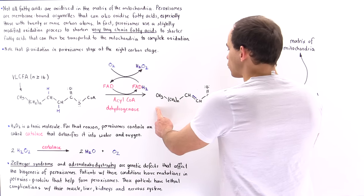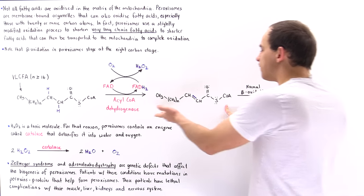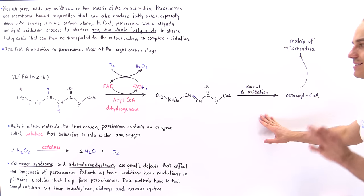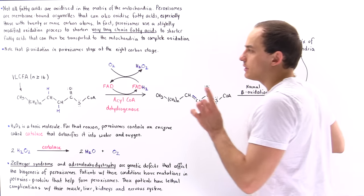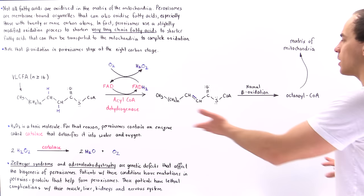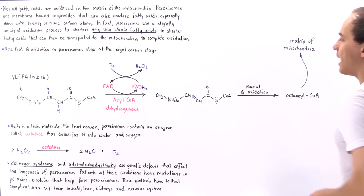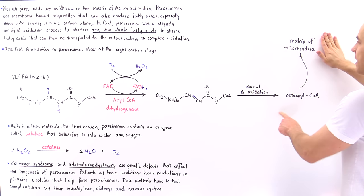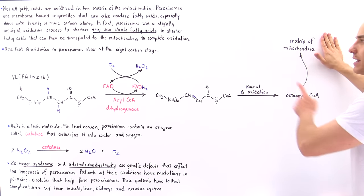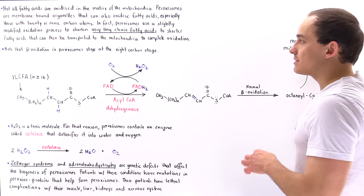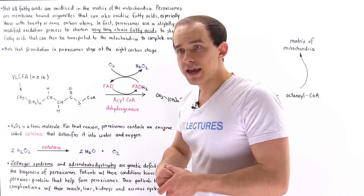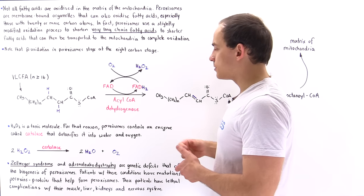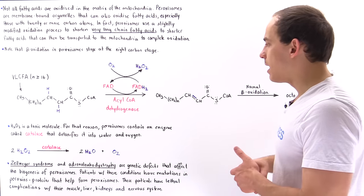Once we generate this intermediate molecule, then follows the same exact identical steps that we typically find in the matrix of the mitochondria. And this process of the normal beta oxidation continues until we form a fatty acid that contains eight carbon atoms. And once we form that, that is then transported into the matrix of the mitochondrion where that oxidation process is completed to form the acetyl-coenzyme A molecules that can be used to generate the high energy ATP molecules.